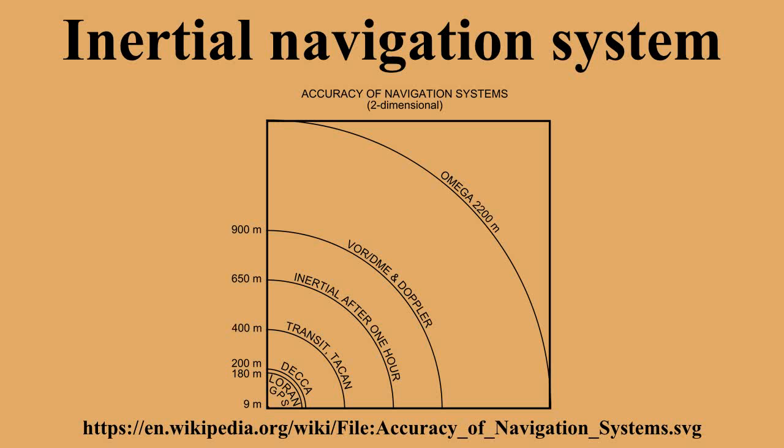Other terms used to refer to inertial navigation systems or closely related devices include inertial guidance system, inertial instrument, inertial measurement units, and many other variations.